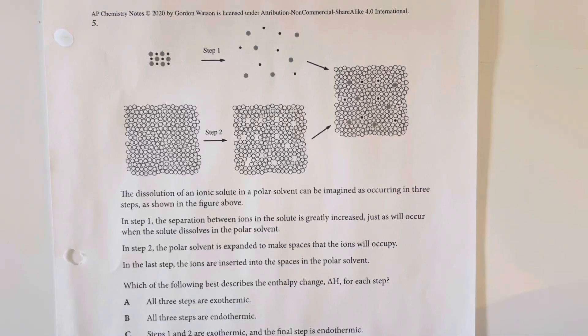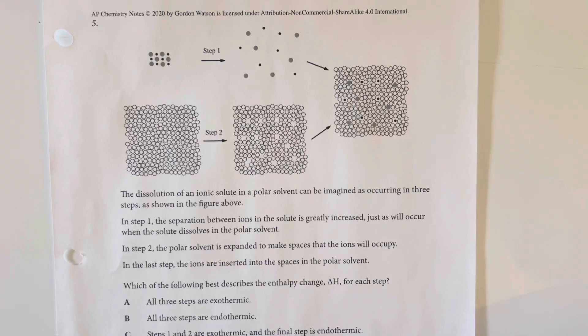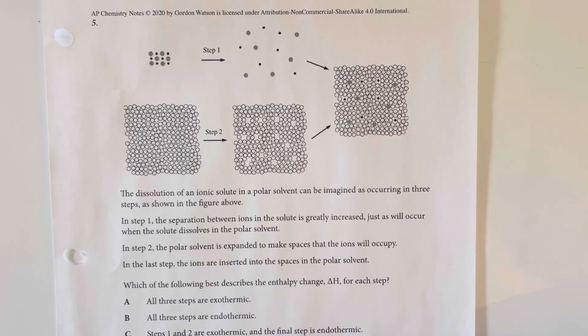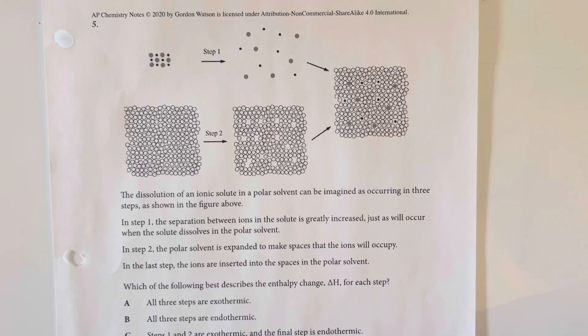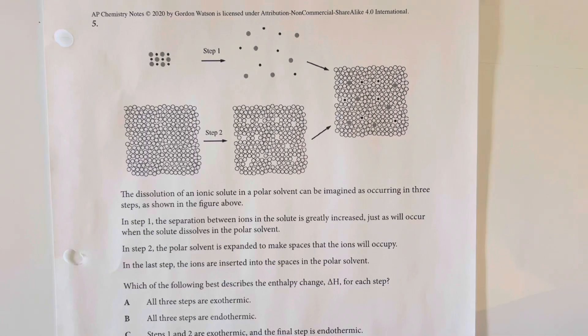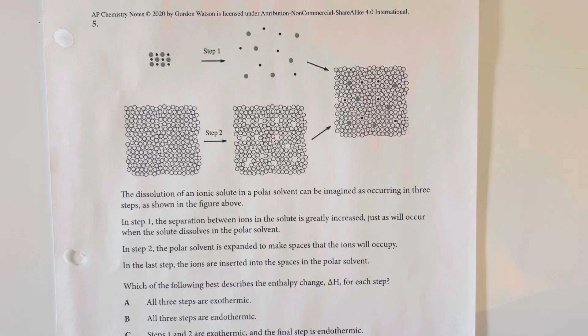The dissolution of an ionic solute in a polar solvent can be imagined as occurring in three steps, as shown in the figure above. In step one, the separation between ions in the solute is greatly increased. Justice will occur when the solute dissolves in a polar solvent. In step two, the polar solvent is expanded to make spaces that the ions will occupy. In the last step, the ions are inserted into the spaces in the polar solvent. And, which of the following best describes the enthalpy change or delta H for each step?